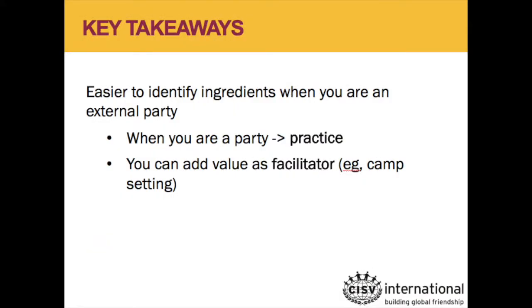The key takeaways from this exercise: it's relatively easy to come up with both sides of the story when you're not emotionally involved. But when you are emotionally involved in a conflict, it's much harder to see a different perspective than your own, so you have to practice — it doesn't come naturally. The good news is it shows you the value you could add as a facilitator or third person in a conflict. This is particularly important in a program setting when you are a staff member or leader and you see two people entering conflict — you can really help them as someone who's not emotionally involved, even though a lot of us don't like to get involved because it feels like none of our business.